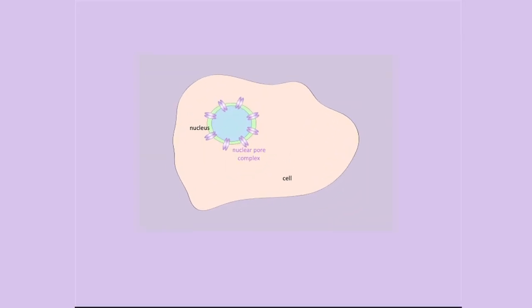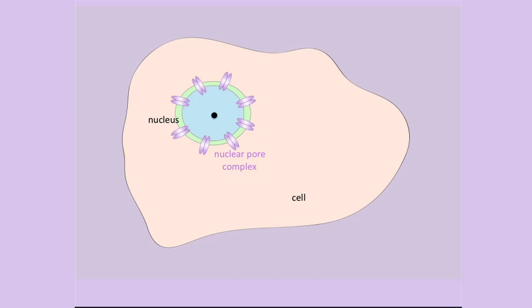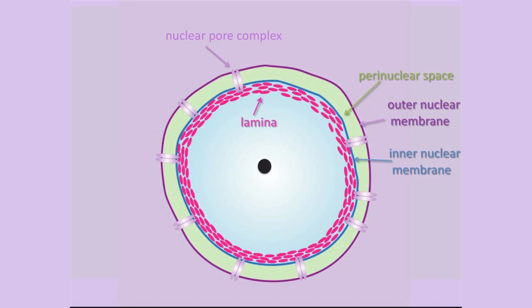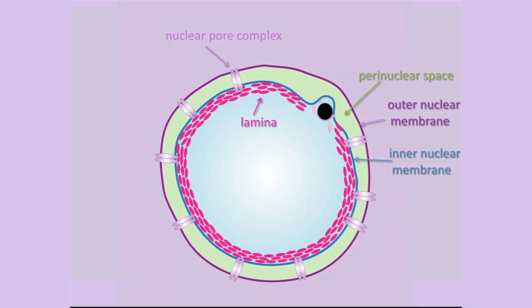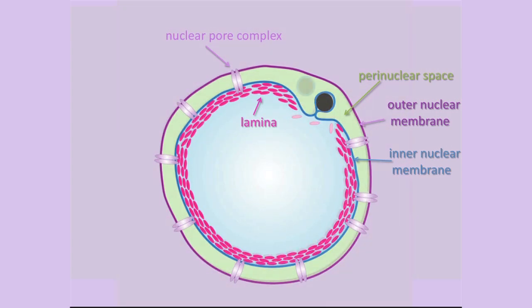Instead, it appeared that they were using a mechanism that resembled the egression of herpes simplex virus from the nucleus. During viral infection, the viral genome is packaged into a capsid inside the nucleus, but this capsid is too large to traverse the nuclear pore. To subvert this, the virus buds into the perinuclear space, leaving it encapsulated by the inner nuclear membrane. This encapsulated viral capsid can then fuse with the outer nuclear membrane and be released into the cytoplasm. Notably, this process was dependent on the nuclear lamin protein LMNA, an A-type lamin associated with a host of human disorders including a number of muscular dystrophies.